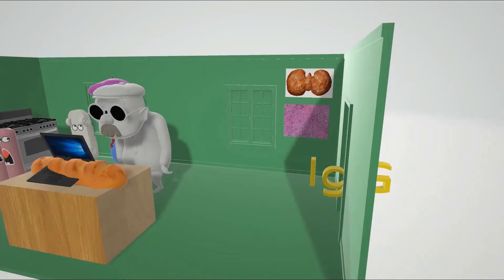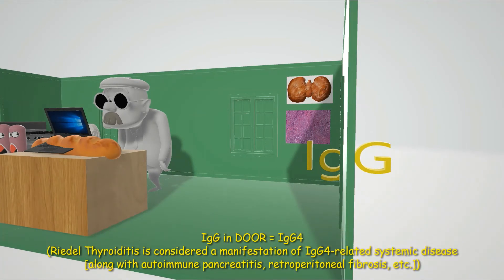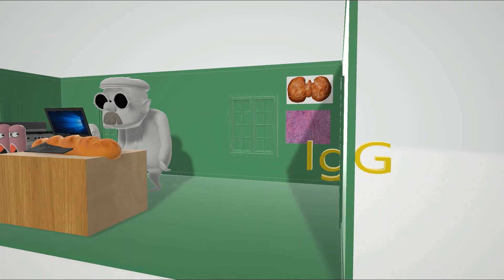In the door we see an IgG randomly stuck — IgG4 in the door — for IgG4 Reidel's Thyroiditis. Reidel's Thyroiditis is considered a manifestation of IgG4-related systemic disease. Other manifestations include autoimmune pancreatitis, retroperitoneal fibrosis, and non-infectious aortitis.